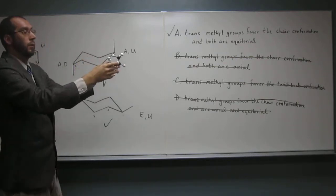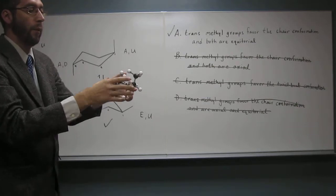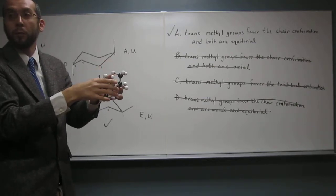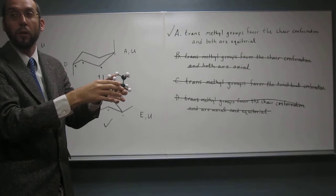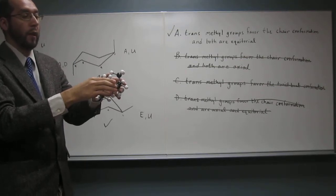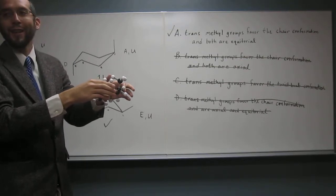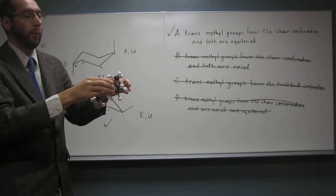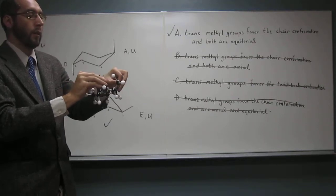So let's do a ring flip now. Remember that equatorial bonds go to axial and the axial bonds go to equatorial when we do that ring flip. That twist boat is kind of the middle of the ring flip, actually. Okay, so let's do that.